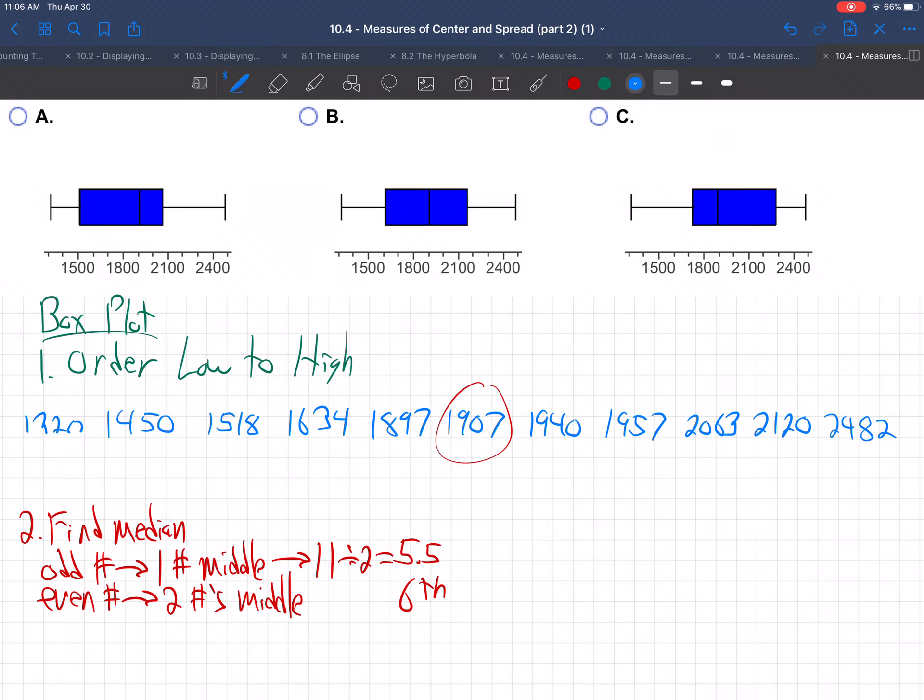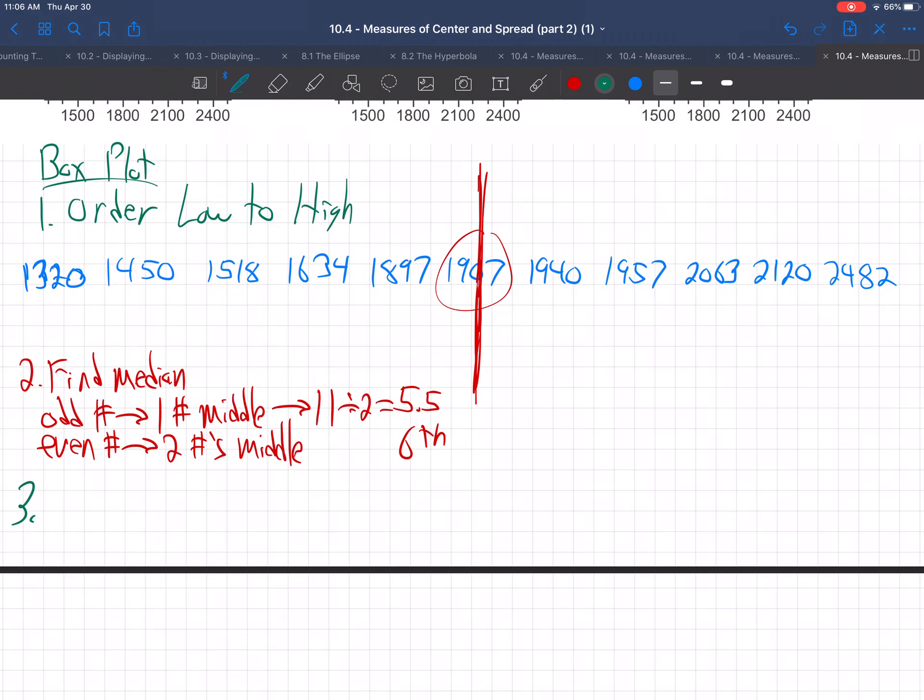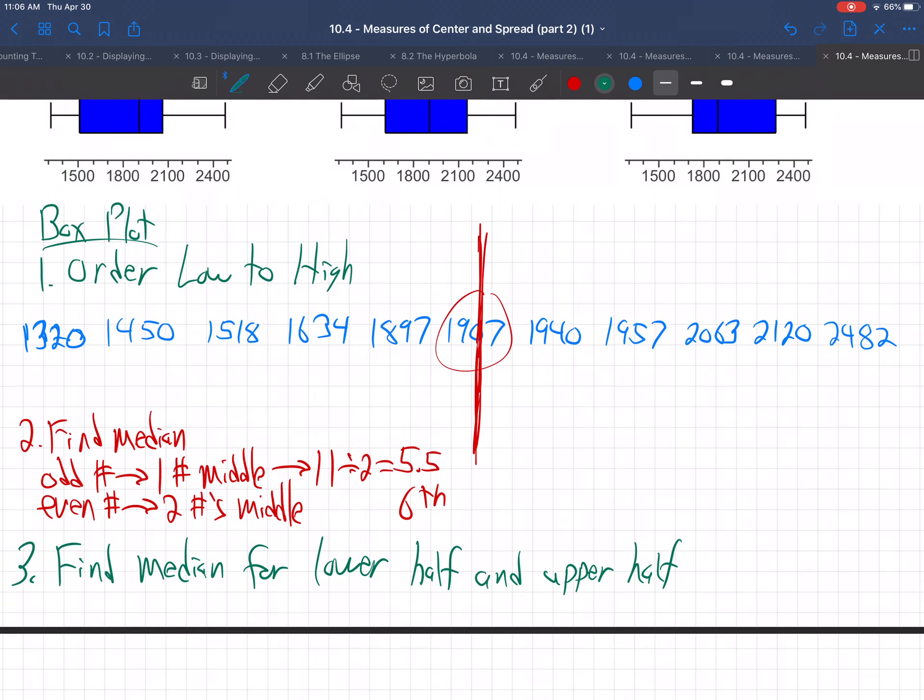I kind of messed that up. Anyway, so let's put a line right through that. That's the very middle of the data set. Now, step three, find the median for the lower half and the upper half. So the lower half has 1, 2, 3, 4, 5 numbers. So again, there's one number in the middle. That would be this number. So boom, there he is, 1518. This number in the very middle, 1907. And then the upper half, five numbers. There's the number in the middle, 2063.